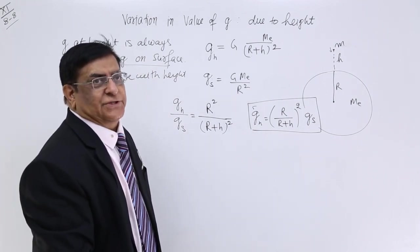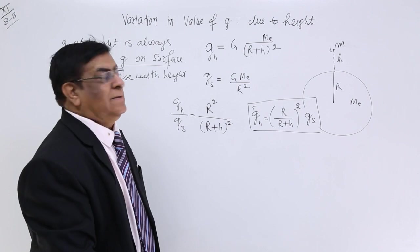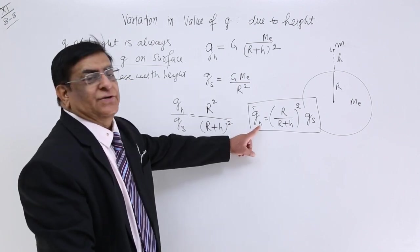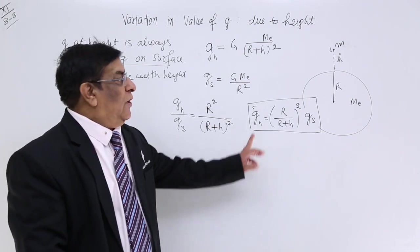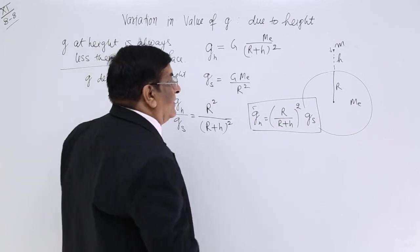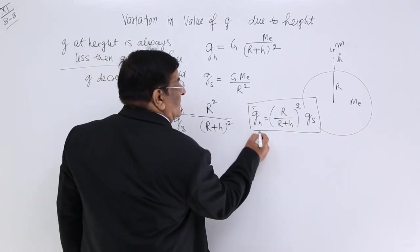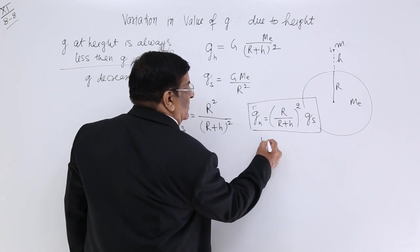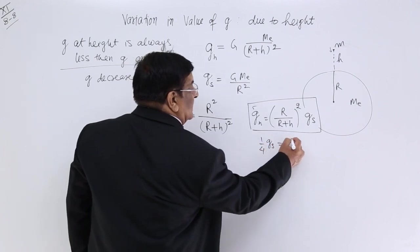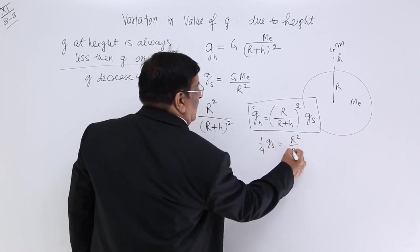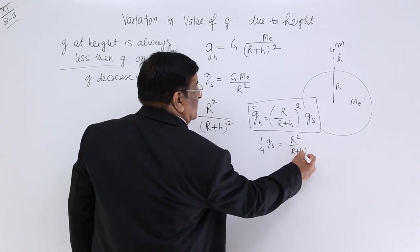Sometimes we will find acceleration at what height. Sometimes we get a question: at what height the acceleration due to gravity will become one-fourth, one-fourth of gravity at surface. So this we can write as one-fourth.